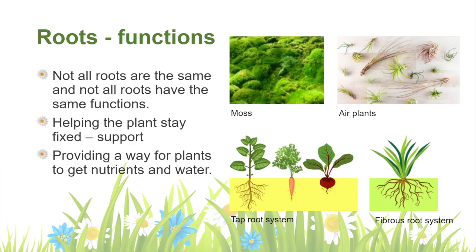You can see from the pictures the main difference. A tap root system has one large main root that does most of the work. Fibrous roots have lots of smaller sized roots which spread out. Interestingly, we actually eat a lot of tap roots as food — carrots, parsnips, beetroot and radishes are some good examples. Without roots, plants would not have an anchor or support, and an important part of the system that provides plants with nutrients and water would be missing.